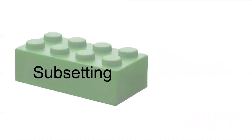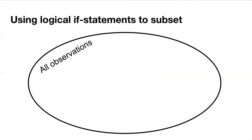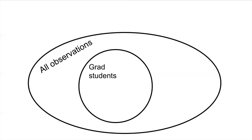Let's start by talking about subsetting. We think about subsetting through using logical if statements, and the best way to talk about logical if statements is through a Venn diagram. Here we have a large oval that represents all observations in our data. From part one, this dataset has survey answers from some friends of me and Rebecca, and a portion of these friends are grad students. So among all of our observations, a subset represents grad students.